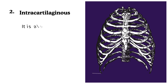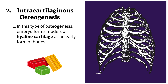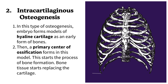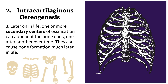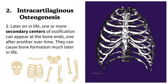We will now talk about intracartilaginous osteogenesis, also known as endochondral osteogenesis. In this type of osteogenesis, the embryo forms models of hyaline cartilage as an early form of bones. Then, a primary center of ossification forms in this model, starting the process of bone formation as bone tissue begins replacing the cartilage. Later in life, one or more secondary centers of ossification can appear at the bone ends, one after another over time, causing bone formation much later in life.